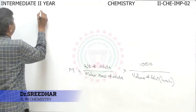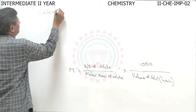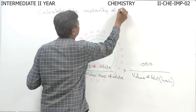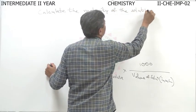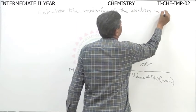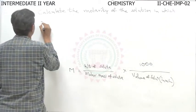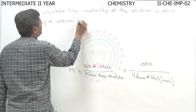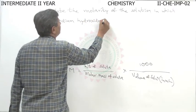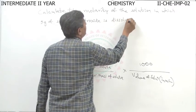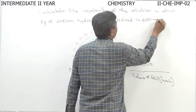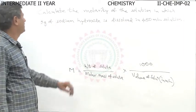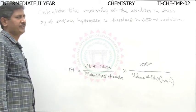Here we can see one problem: calculate the molarity of a solution in which 5 grams of sodium hydroxide is dissolved in 450 mL solution. This is a very important problem.